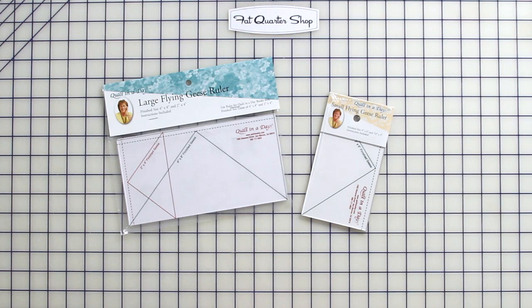It comes in two sizes and I use it all the time. When you use this ruler, you're going to have less waste when you make your flying geese, and you're going to trim your flying geese down so they end up the perfect size and work better in your quilts.